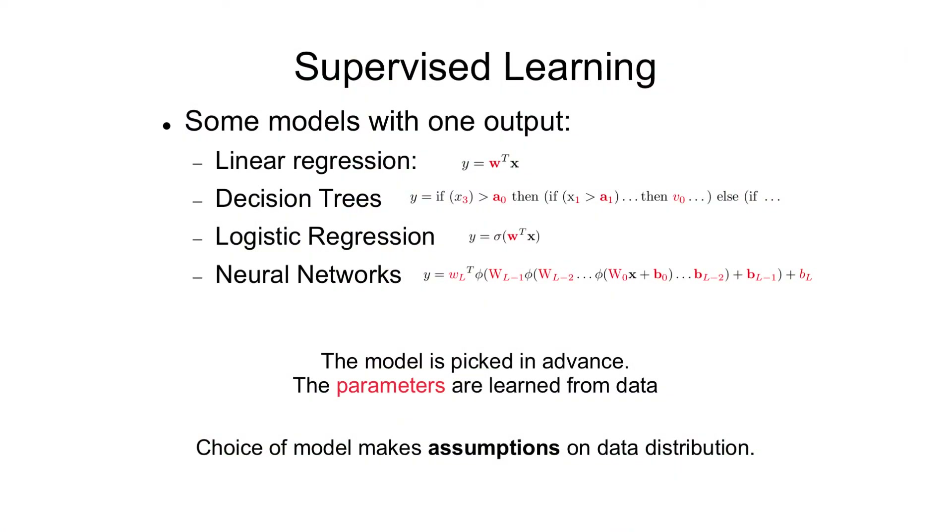Here you can see a bunch of different machine learning models. I don't expect you to understand the math, but they range from very basic to very advanced, and these are all supervised learning models. The principle of all these models is really the same. You see various symbols in red — those are called the parameters of the model. The goal of supervised learning is to specify a model in advance and just tweak these parameters — these numbers — based on data, based on some update rule, and to learn a good predictor.